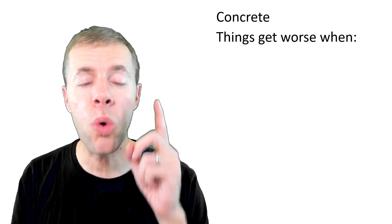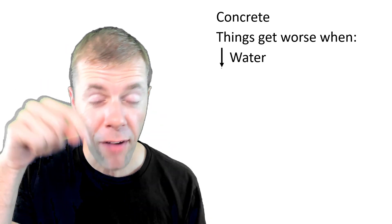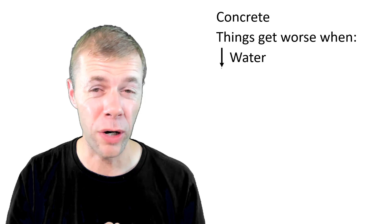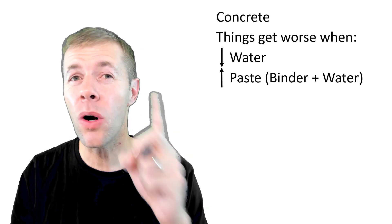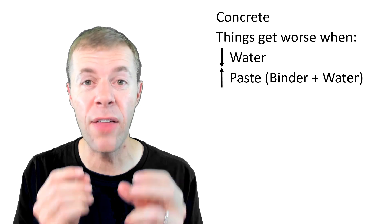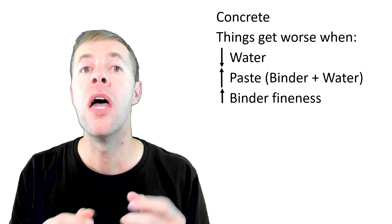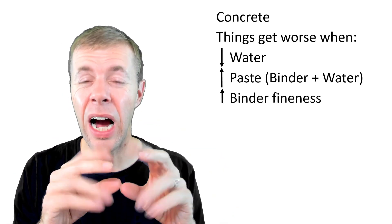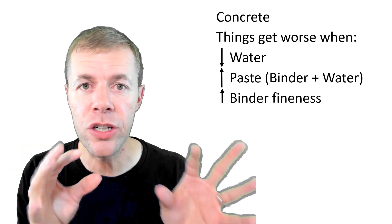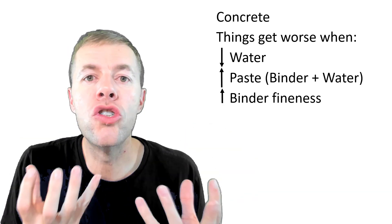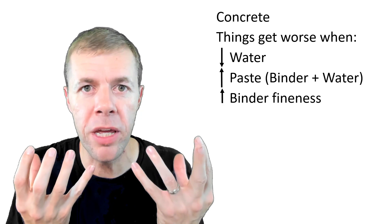So what are the things that impact plastic shrinkage? Let's talk about the concrete first. Things will get worse when we have lower amounts of water in our concrete, higher amounts of paste—that's the binder and the water together because that is what shrinks. When our binder has high amounts of fines, very small material, they'll want to absorb our water and that water won't be available to bleed.